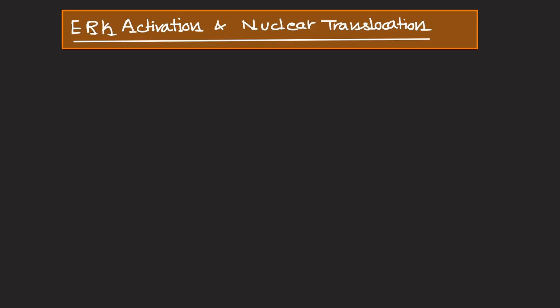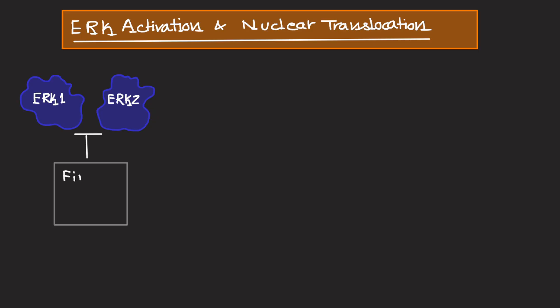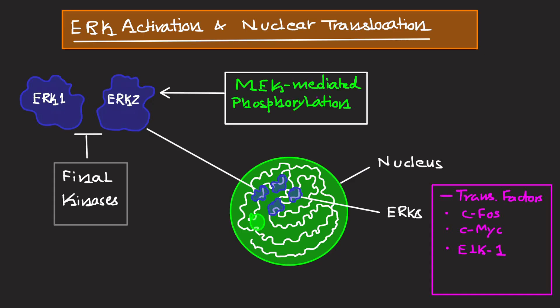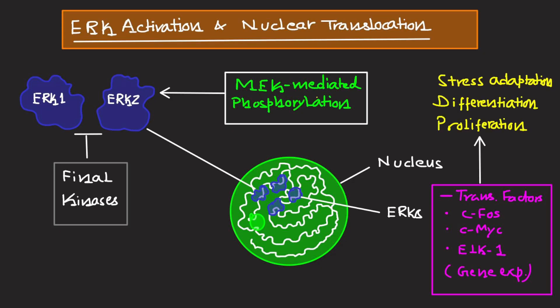Moving further, we have ERK activation and nuclear translocation. ERK1 and ERK2, the final kinases in this cascade, become activated by MEK-mediated phosphorylation. Once phosphorylated, ERK is translocated to the nucleus, where it phosphorylates a variety of transcription factors such as c-FOS, c-MYC, and ELK1. These transcription factors drive the expression of genes regulating cell proliferation, differentiation, and stress adaptation.